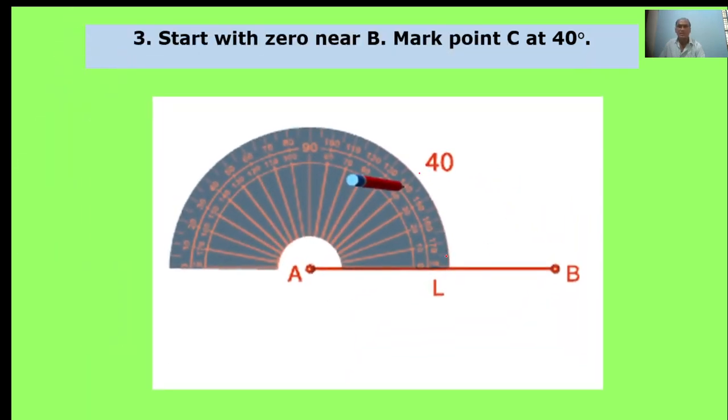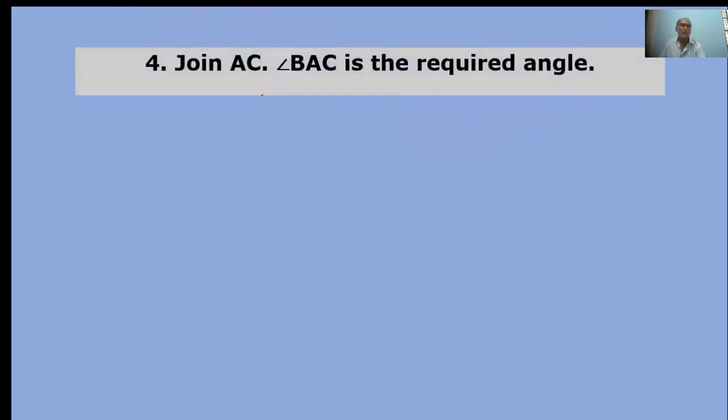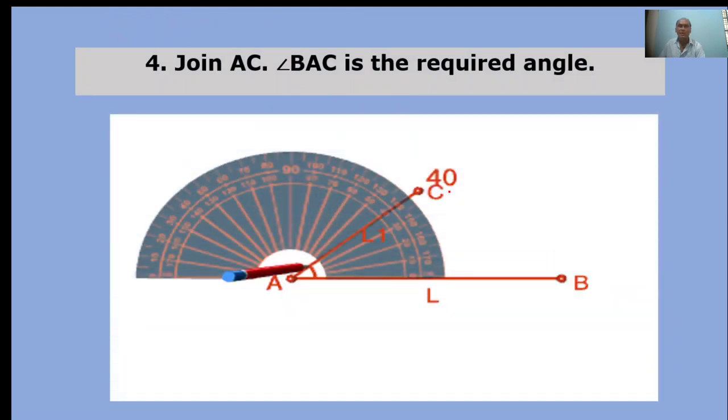Start with zero near B. Mark point C at 40 degrees. Here at zero, put point A. We take the point to 40 degrees. Join AC. Angle BAC is the required angle. BAC equals 40 degrees.